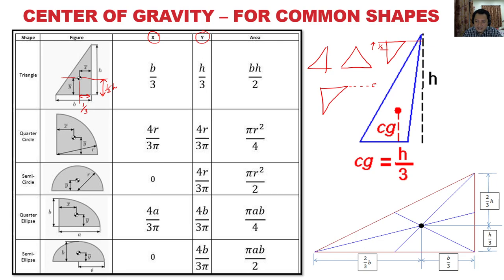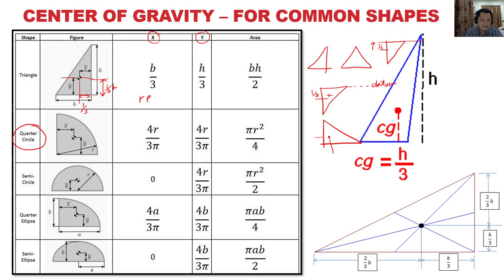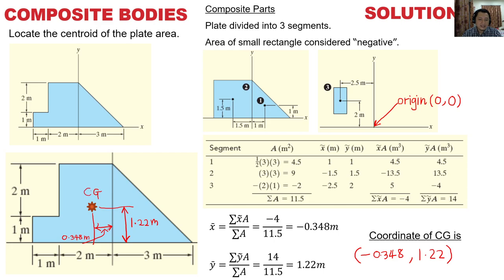Whether you rotate the triangle, the CG is still one-third from the base. For other shapes like quarter circles and semi-circles you don't need to memorize — you can refer to diagrams. But for triangles, which are very common, remember one-third. For a quarter circle, the formula is 4r over 3π for both x and y dimensions.